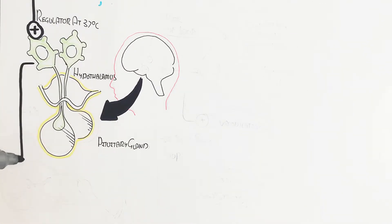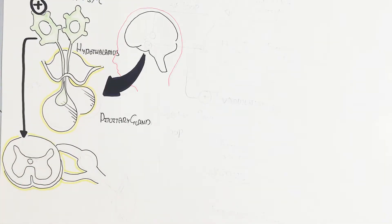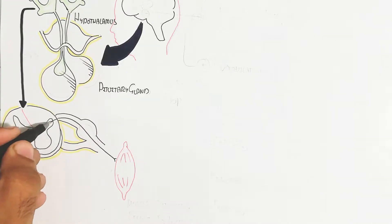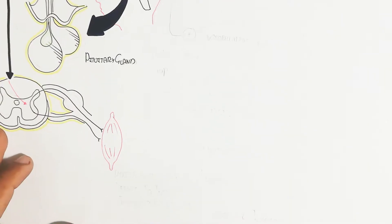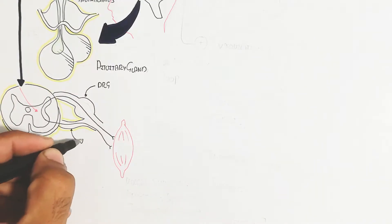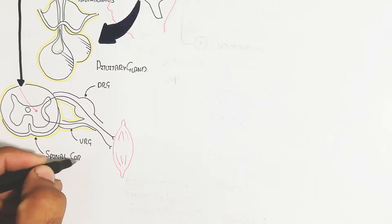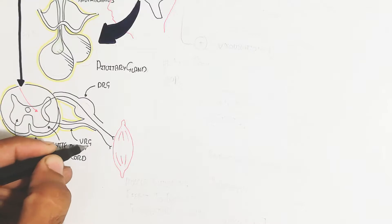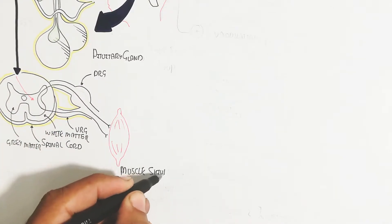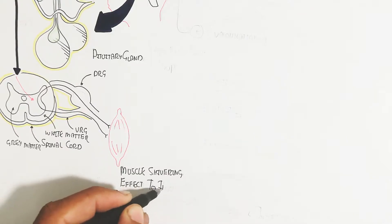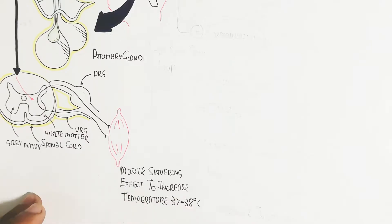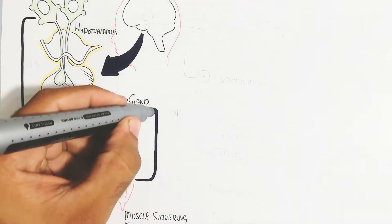The nervous system is involved in triggering muscle shivering. The spinal cord contains gray matter, white matter, dorsal root ganglion, and ventral root ganglion. The dorsal root ganglion carries sensory information to the ventral root ganglion, which activates motor neurons leading to muscle shivering. The hypothalamus triggers this process, and shivering increases body temperature from 37 to 38 degrees Celsius.